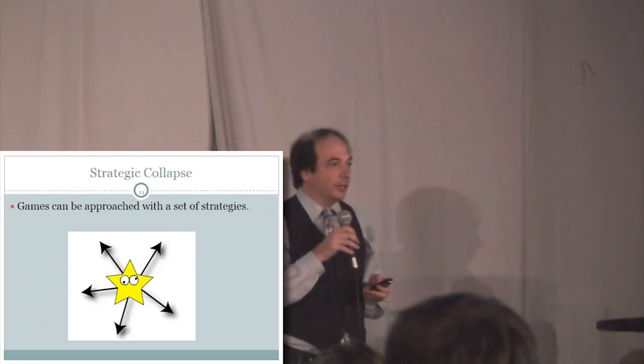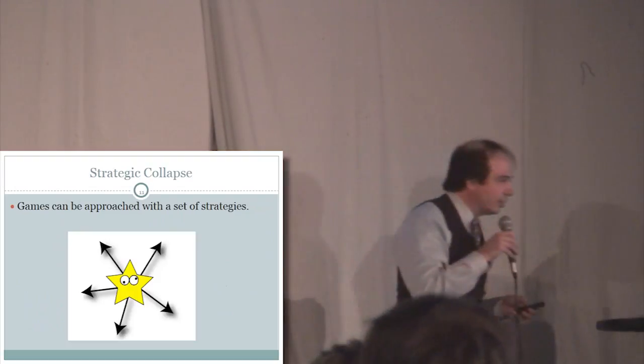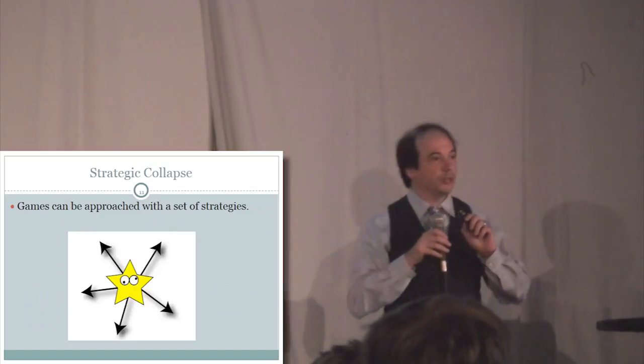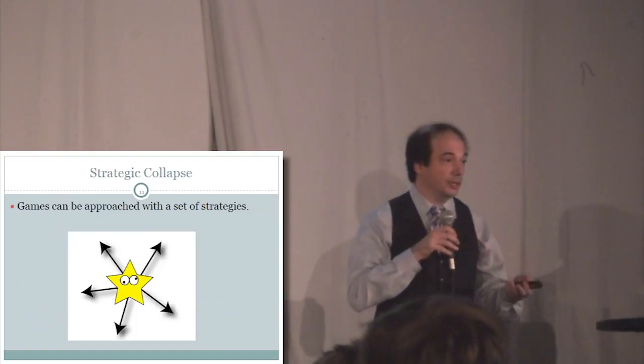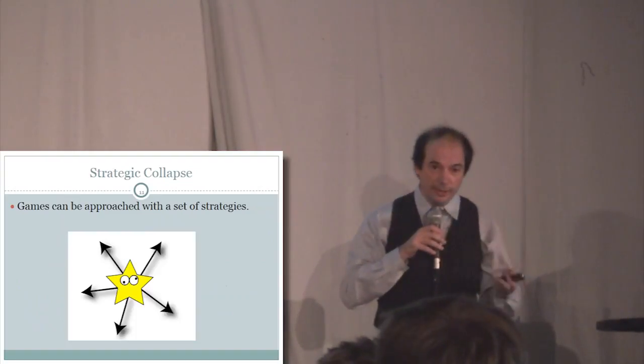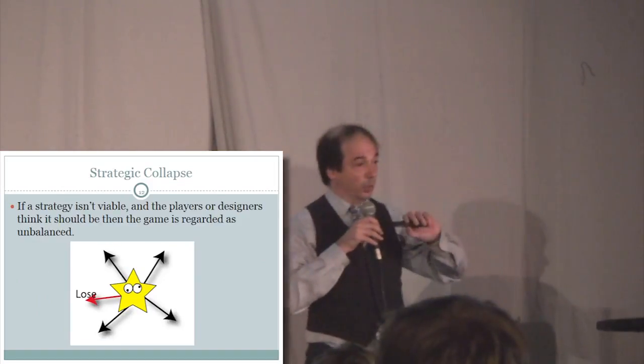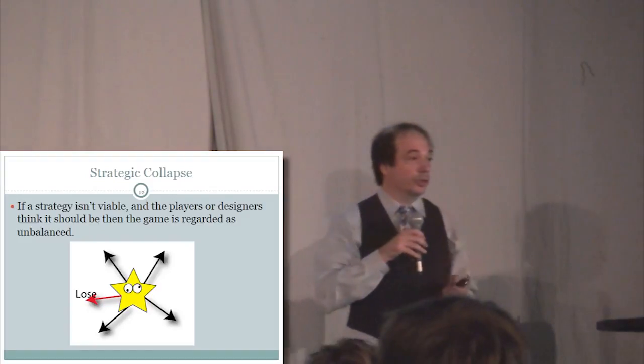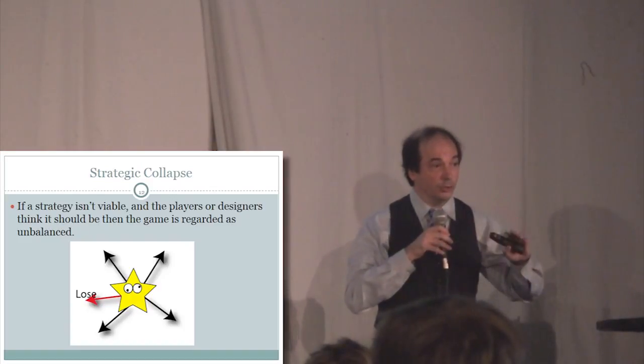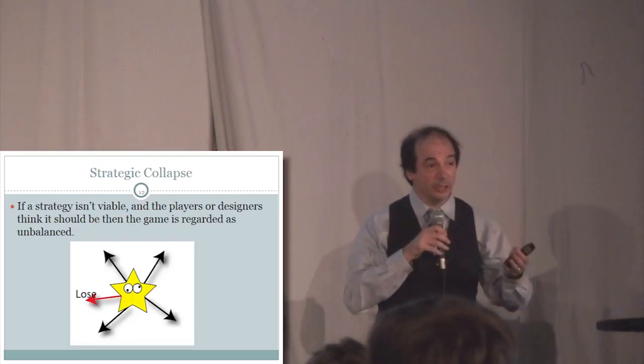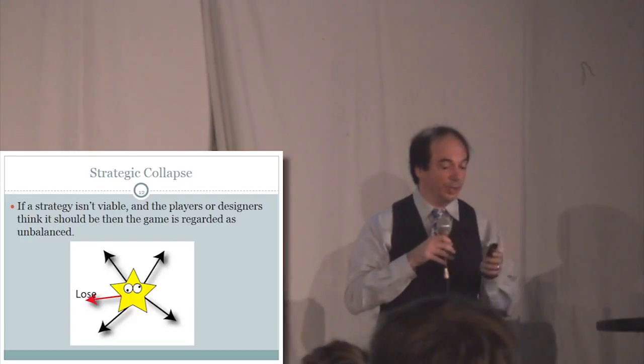In general, if I say something that doesn't apply to the game you're thinking about, there's a good chance that's because you're thinking about a game that isn't really an ortho game. When we talk about balance, oftentimes what we're talking about is strategic collapse. Strategic collapse is when players have a tactic or a strategy which they want to use, which they think should be usable, which isn't usable. They will call the game unbalanced.